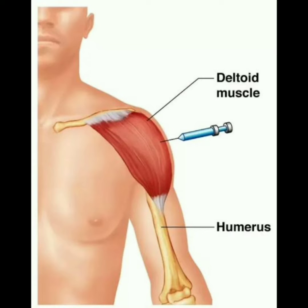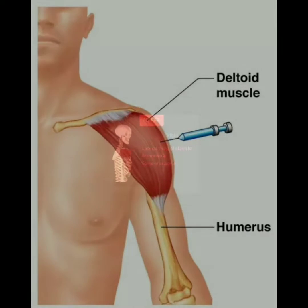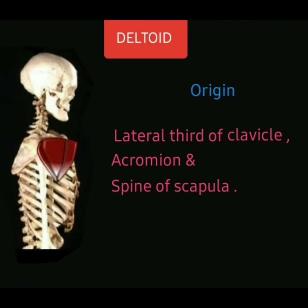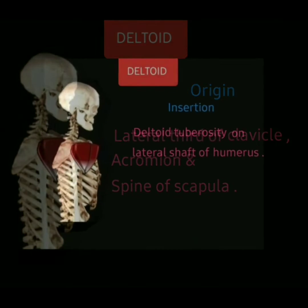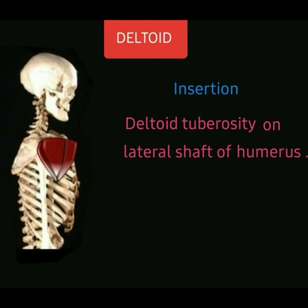Assalamualaikum, welcome to my new video. In this video I will discuss the anatomy of the deltoid muscle. The deltoid muscle originates from the lateral third of the clavicle, the acromion, and the spine of the scapula.